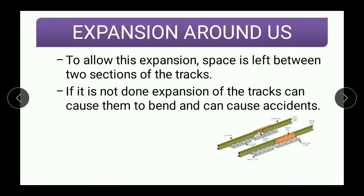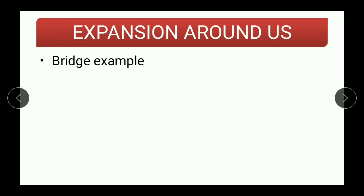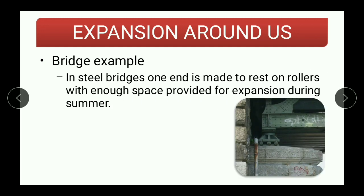Let us take one more example where expansion is undesirable — the bridge. In summers, wherever the temperature is very high, expansion can cause loosening of a bridge and it may cause accidents. So to avoid that, in steel bridges especially, one end is made to rest on rollers with enough space provided for expansion during summer. These rollers provide some space for expansion during summers.